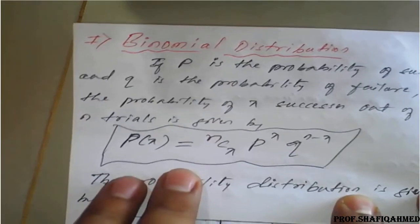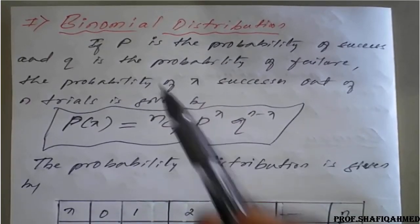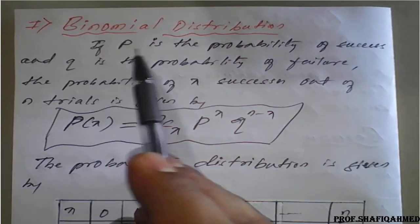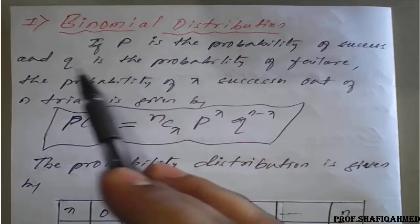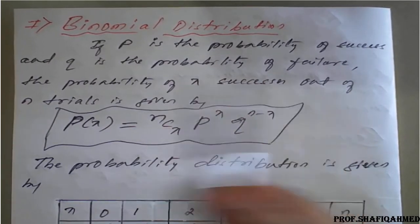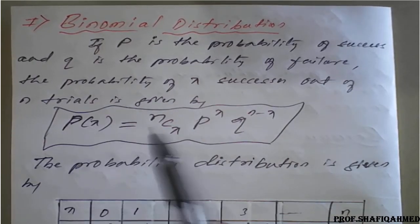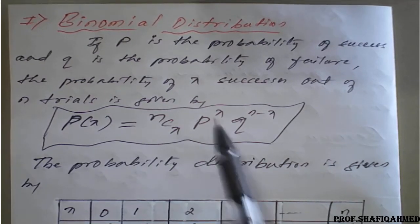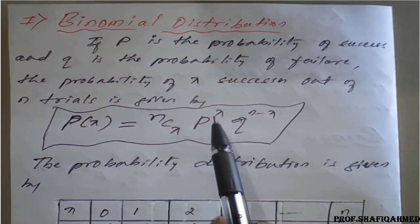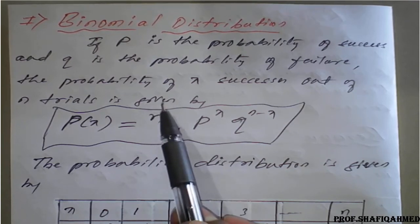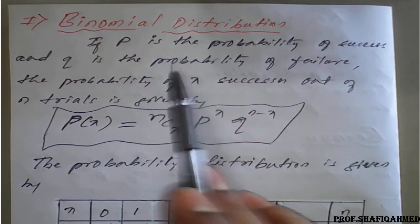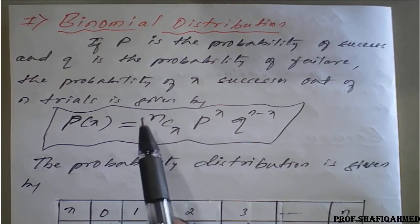First, we will see binomial distribution. Binomial distribution: if P is the probability of success and Q is the probability of failure, the probability of X successes out of N trials is given by P(X) = NCX times P raised to X times Q raised to N minus X. This distribution formula for binomial is nothing but the Bernoulli's theorem result, so Bernoulli's theorem result is also called binomial distribution. We use the same result for both Bernoulli's and binomial.